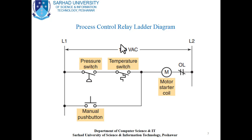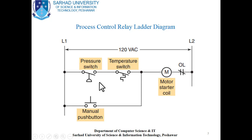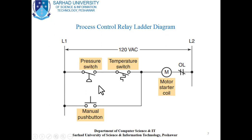Here you can see the two sensors: the pressure sensor and the temperature sensor, each with their respective schematic symbols — which are totally different from each other. The manual push button is normally open. The pressure switch is also normally open, and the temperature switch is also normally open. Each input has two terminals: for the pressure switch, terminal 1 and terminal 2; for the temperature switch, terminal 1 and terminal 2.